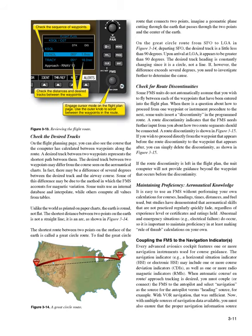Coupling the FMS to the navigation indicators. Every advanced avionics cockpit features one or more navigation instruments used for course guidance. The navigation indicator — for example, a horizontal situation indicator (HSI) or electronic HSI — may include one or more course deviation indicators (CDIs), as well as one or more radiomagnetic indicators (RMIs). When automatic course/en-route/approach tracking is desired, you must couple, or connect, the FMS to the autopilot and select navigation as the source for the autopilot versus heading source.